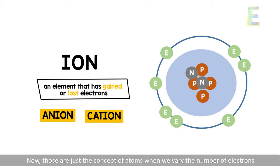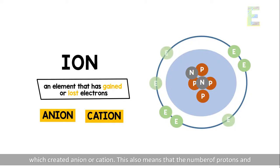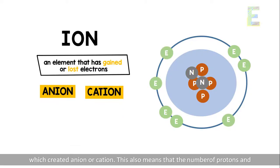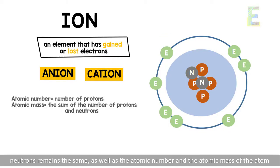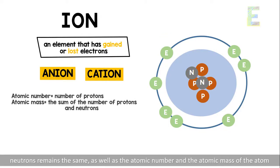Now, those are just the concept of atoms when we vary the number of electrons. Its variation affects the electrical net charge of the atom, which created an anion or cation. This also means that the number of protons and neutrons remains the same, as well as the atomic number and the atomic mass of the atom.